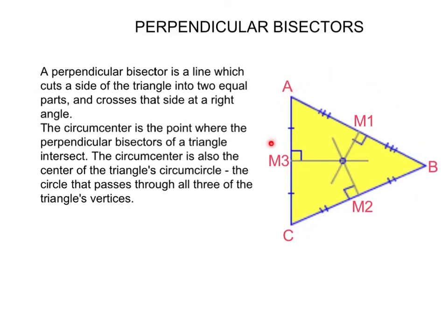So if we had a compass and we wanted to draw a circle, we would choose this point of intersection as our center of our circle. Thank you.